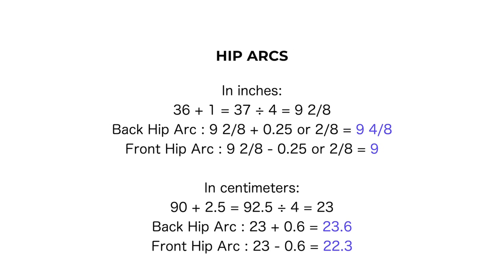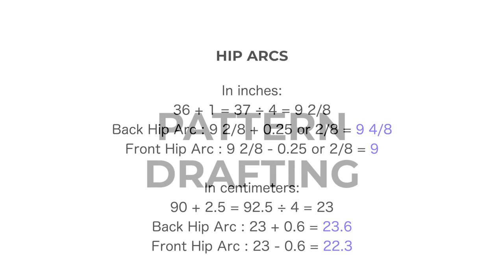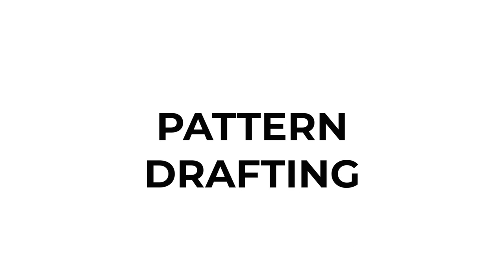For the hip arcs, it's the opposite of the waist arcs. I also added one inch for movement allowance and divided the sum by four. For the back hip arc, I add 0.25 inches (2/8 of an inch); that sum is the back hip arc. For the front hip arc, I subtract 0.25 inches (2/8 of an inch); that difference is the front hip arc. Please use and record your own measurements — these are only example calculations.